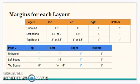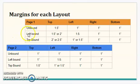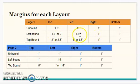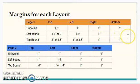For the unbound manuscript, page one: the top is 1.5 inches and the left, right, and bottom are 1 inch. So if I was doing a left bound manuscript, I would add 0.5 to the left — making it 1.5. So I'll have a top margin of 1.5, left of 1.5, and right and bottom at 1 inch.